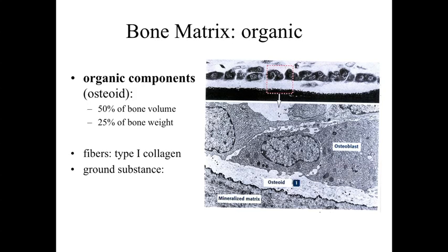What makes bone different from the other specialized connective tissues is the extracellular matrix. It's going to be composed of both organic and inorganic components. The organic components are going to be referred to as osteoid, comprising about 50% of the bone volume and about 25% of the bone weight. This is your traditional extracellular matrix with fibers — primarily type 1 collagen fibers — and ground substance. The type 1 collagen present within this osteoid establishes the three-dimensional matrix of the bone structure.